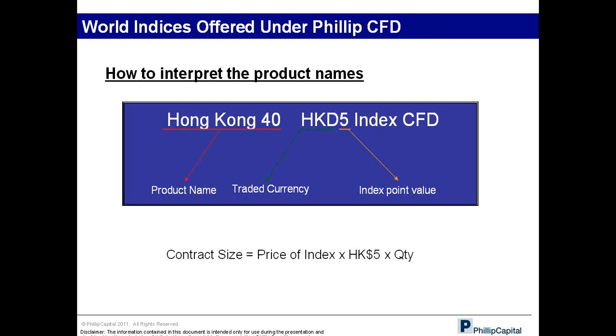Let me dive into the contract specifications and how to read the names of the indices, so you know what you're trading. For example, if you look at the trading platform and see 'Hong Kong 40 HKD $5 Index CFDs,' 'Hong Kong 40' tells you which market you're looking at and which index it tracks. Hong Kong 40 tracks the Hang Seng, and every point of the index is worth HKD 5. The contract size is derived by taking the price of the index multiplied by HKD 5 multiplied by the number of contracts.